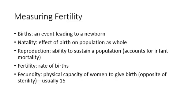Fertility is the rate of births. Then another term that perhaps you're not familiar with: fecundity, which is the physical capacity of women to give birth — sort of the opposite of sterility — and that number usually is around 15. It's the physical maximum for women.